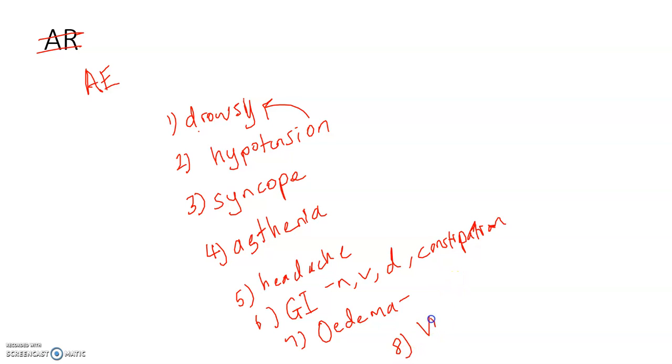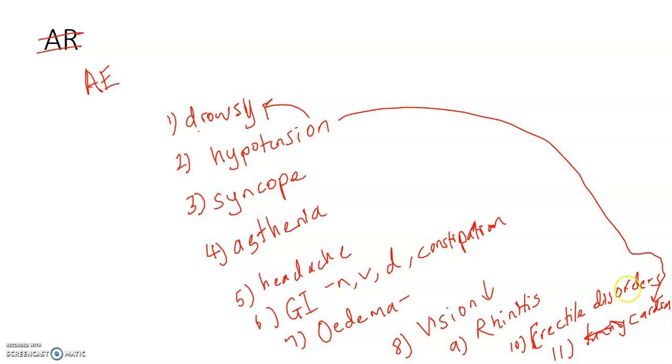You might have blurred vision, rhinitis (inflammation in your nasal passage), erectile disorders, tachycardia—probably as a reaction of the body to hypotension—and palpitations. You can also have hypersensitivity reactions like rash, pruritis, angioedema, etc.